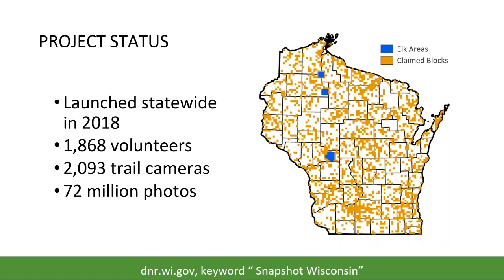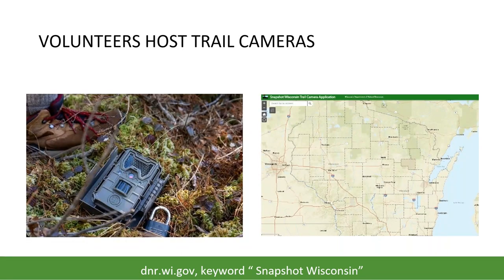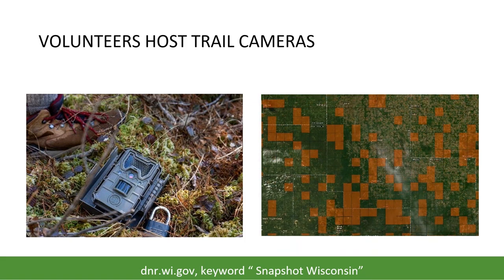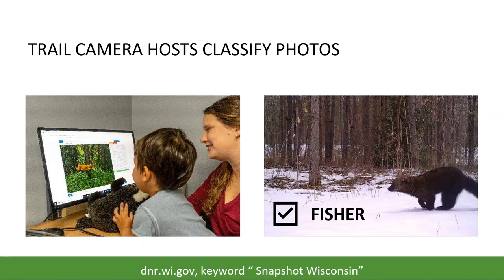Many of the trail cameras are already placed on the landscape and volunteers can apply to monitor them. There are two main ways you can get involved with Snapshot Wisconsin as a community scientist. The first is to host trail cameras — the project divides the state into 6,000 survey blocks where volunteers can sign up to host a trail camera. This involves deploying and maintaining the camera for at least a year; the team provides all equipment needed at no cost. After uploading their photos, volunteers get the first opportunity to see and classify what the camera has captured.